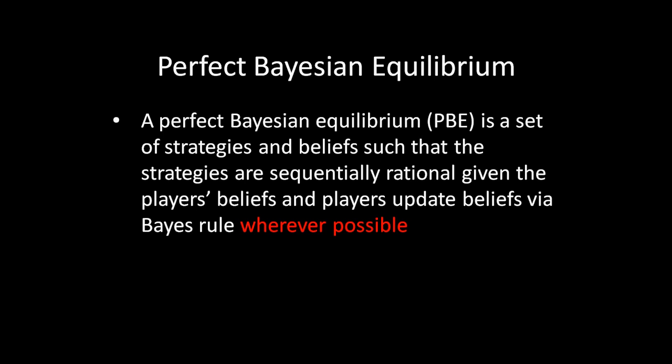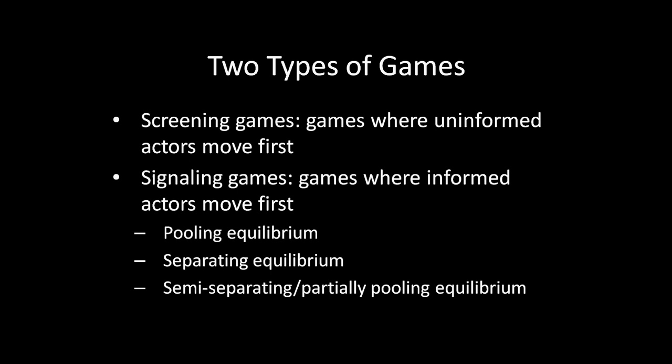That's a good segue to the outline for the rest of this unit. We're going to look at two types of games: screening games and signaling games. In signaling games, there's an information problem where it might not be easy to update beliefs via Bayes' rule, whereas screening games don't have that problem. Because screening games are simpler, we'll start with those. In a screening game, the uninformed actor moves first — there's no information conveyed in that action since the uninformed actor doesn't know anything. In signaling games, an informed actor moves first, which forces them to really think about what they're communicating, resulting in pooling equilibria, separating equilibria, and semi-separating or partially pooling equilibria.